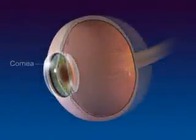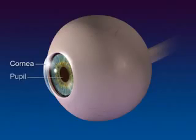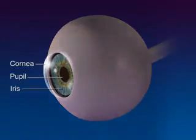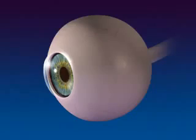The cornea is a clear circular area in the sclera where light enters the eye. The pupil is the circular opening in the front of the choroid. The iris is the colored smooth muscle surrounding the pupil, which adjusts the size of the opening according to the brightness of light.